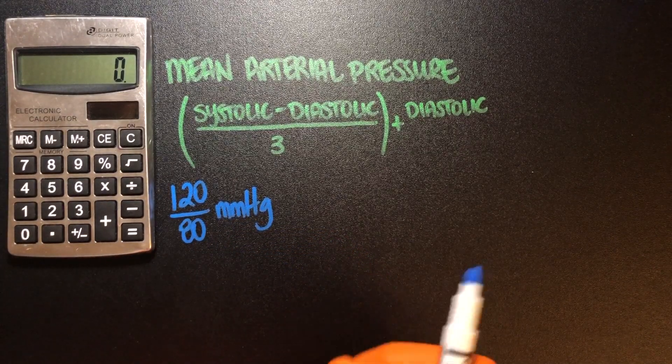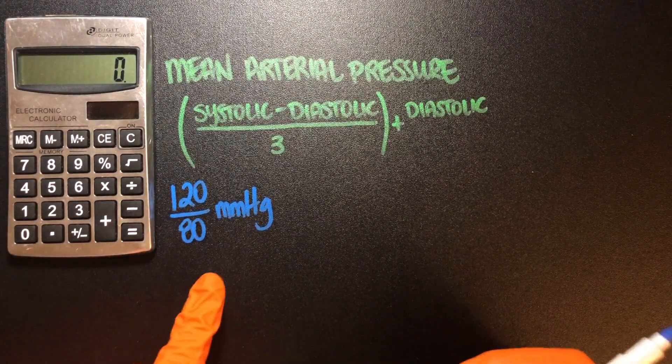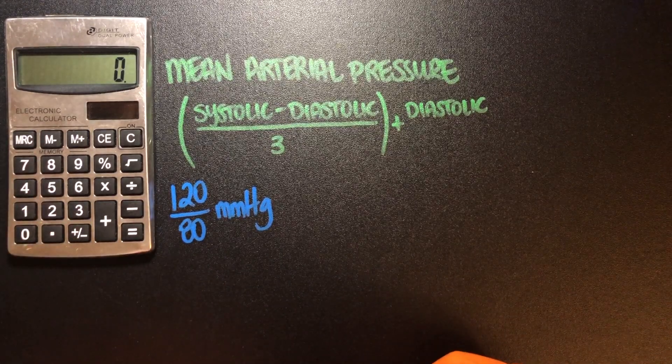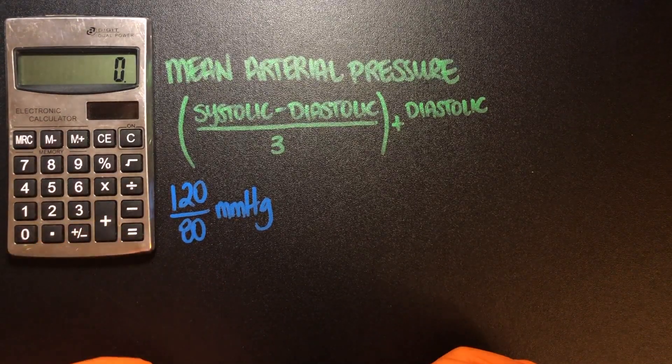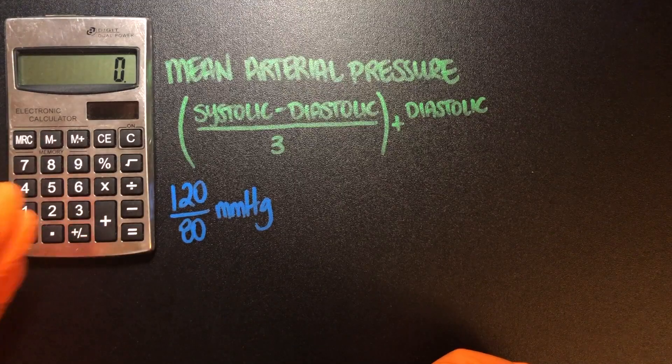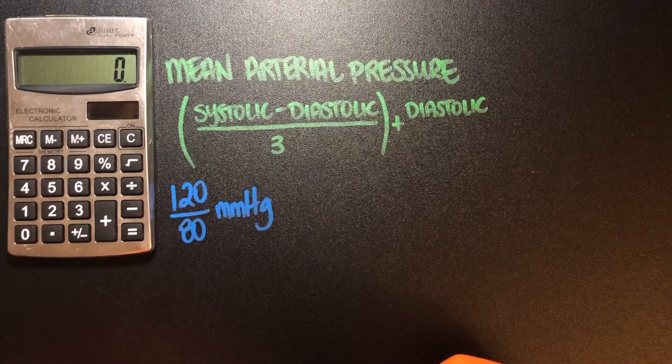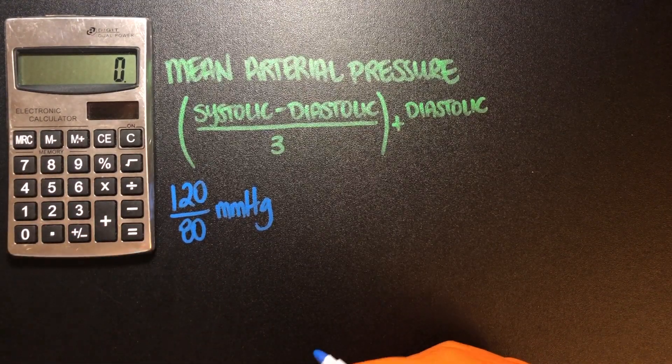So when we start this, go ahead and just click the buttons exactly how I click them. Make sure you know how to do this on a very basic, this is a dollar store calculator, so make sure you know how to do it on a very simple calculator.